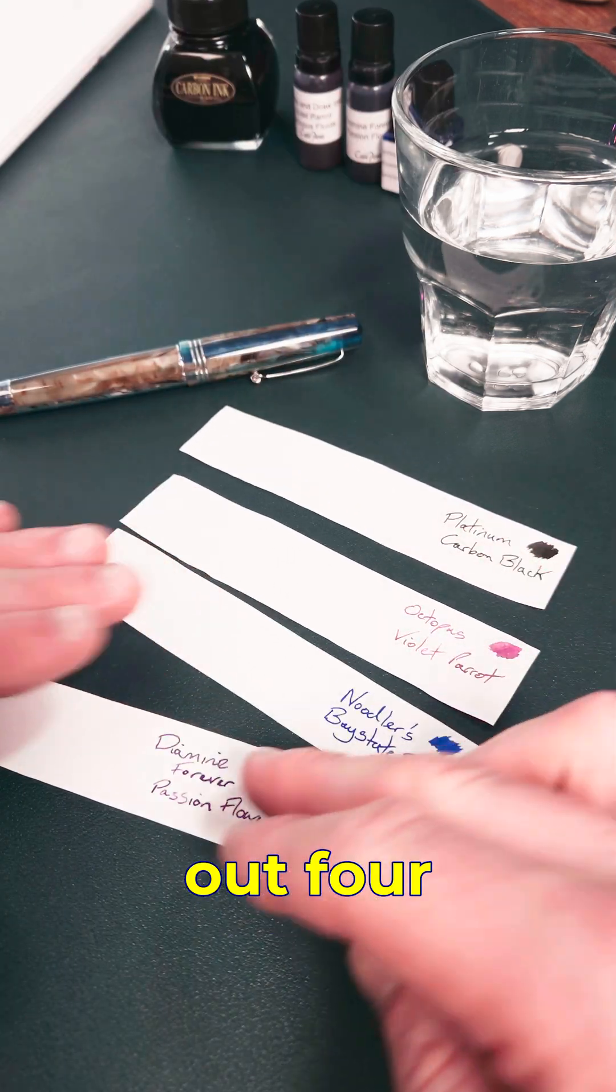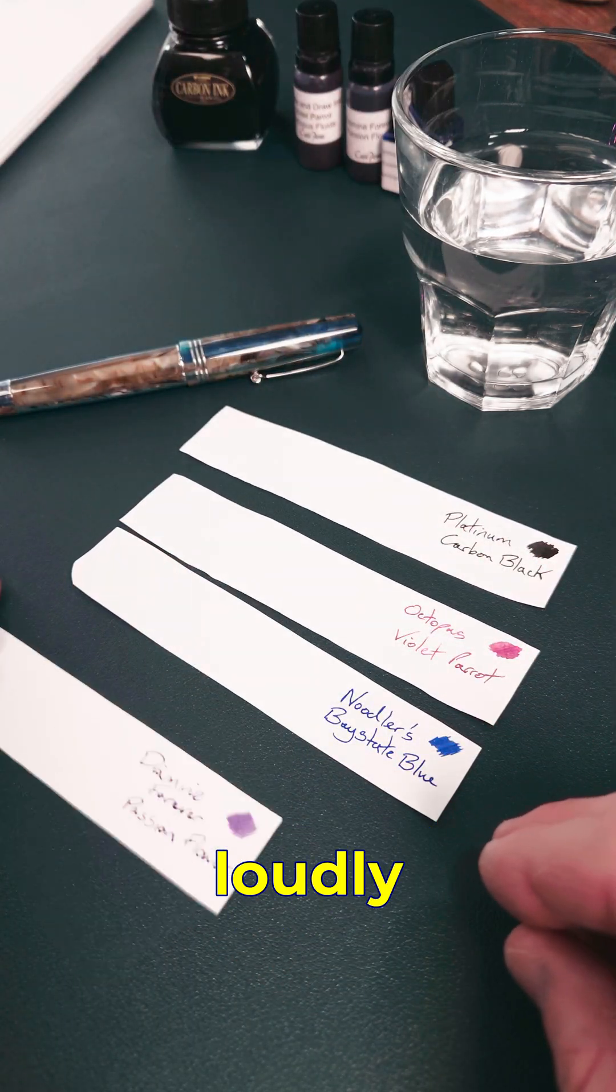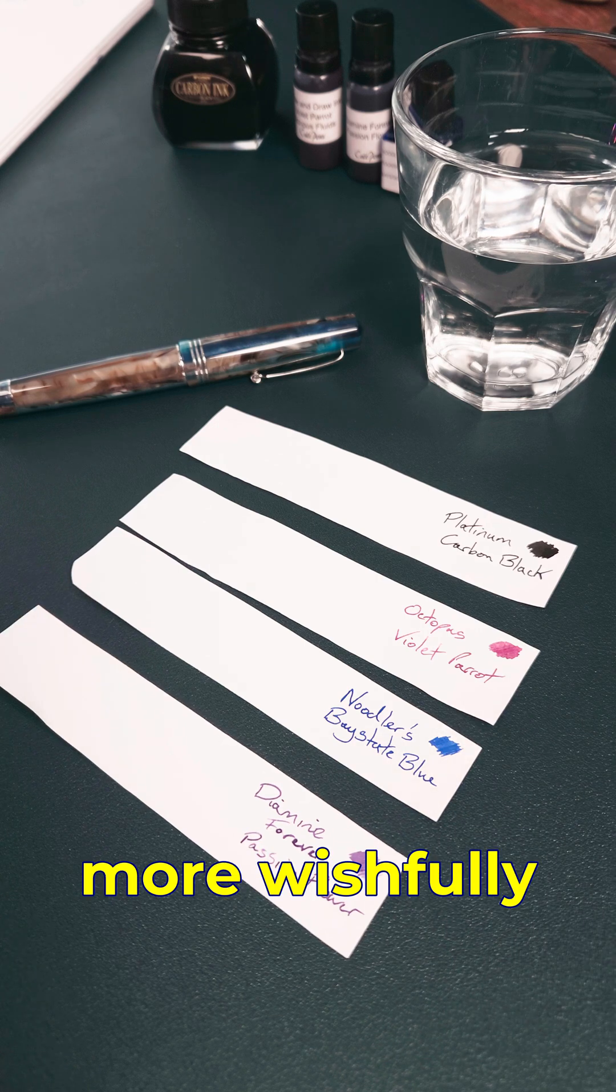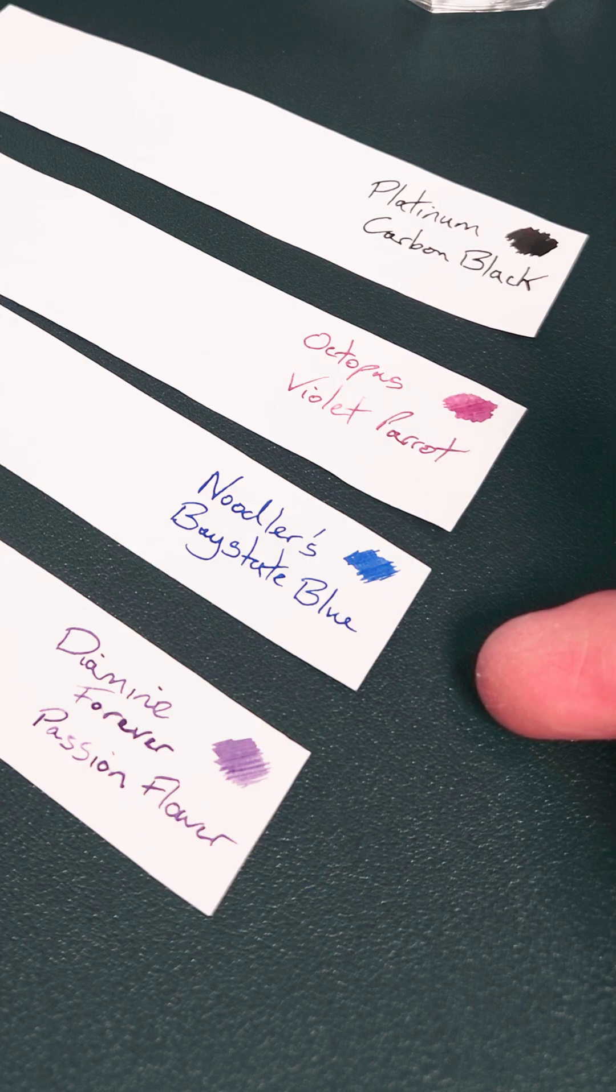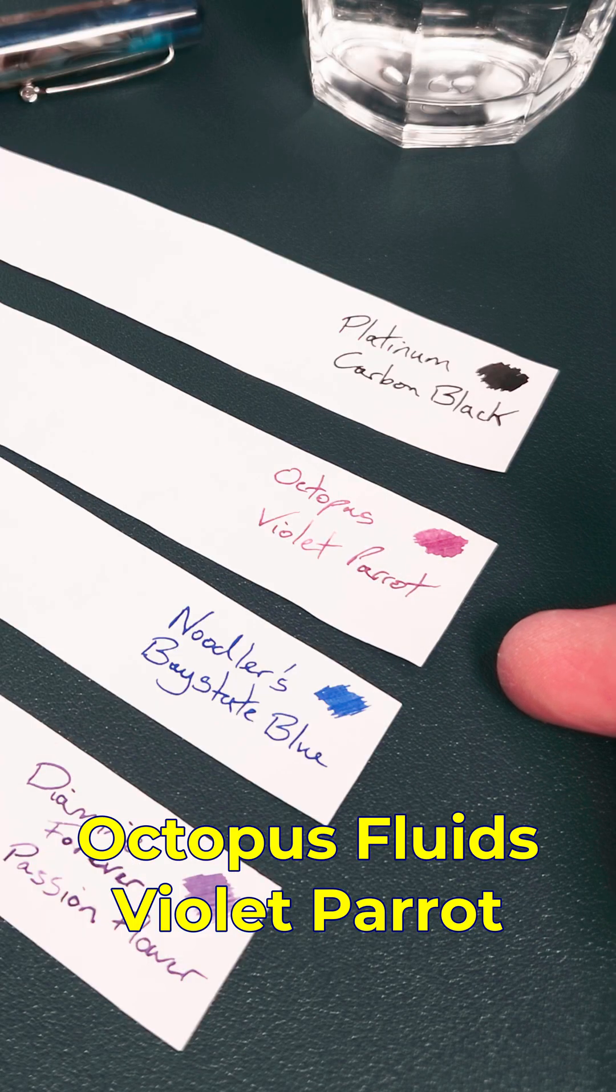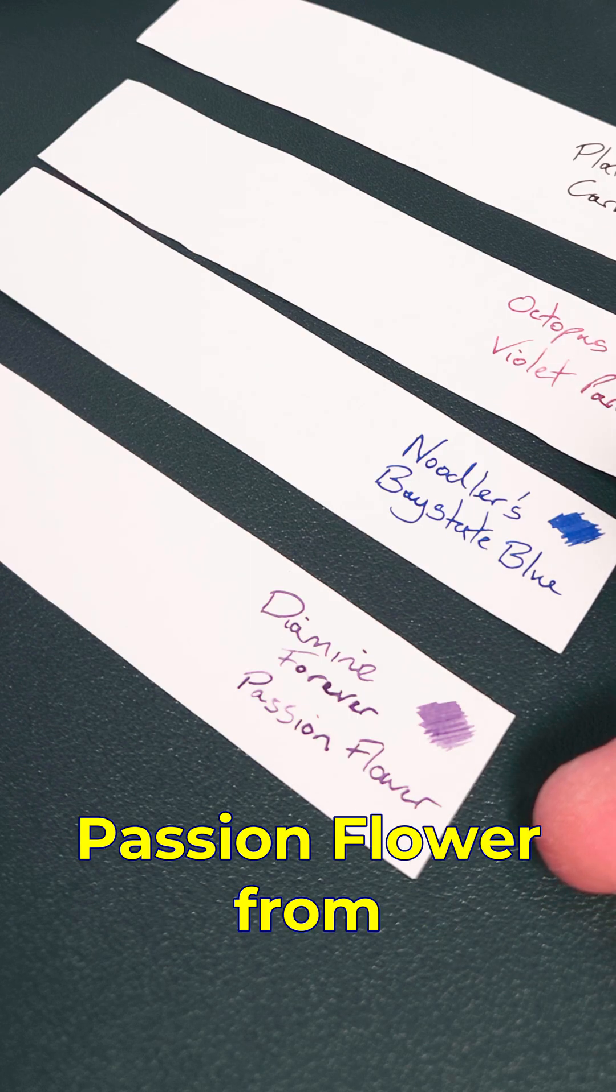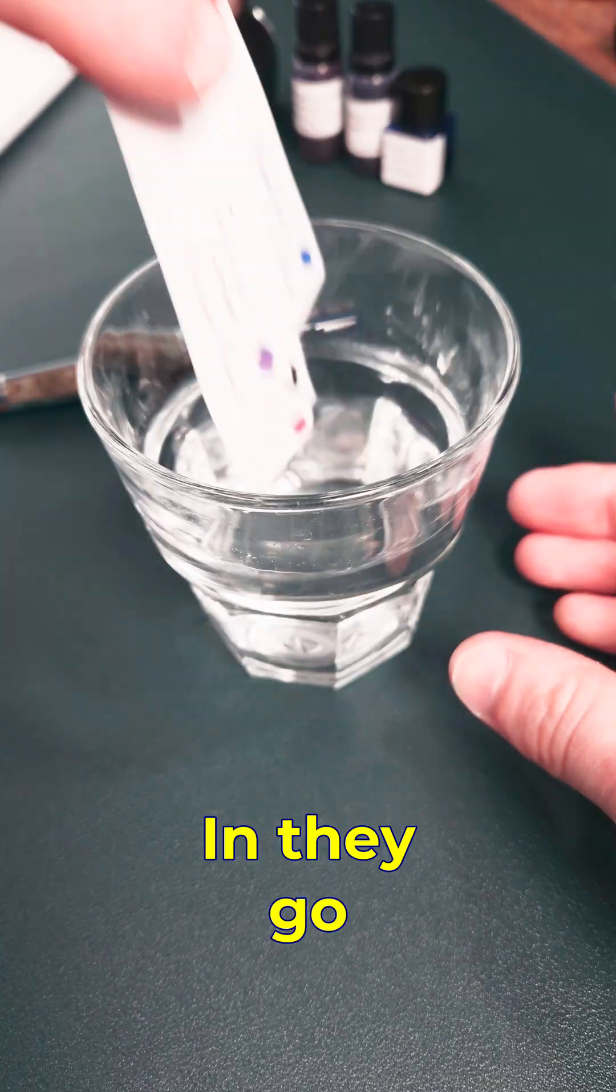Today I'm testing out four different inks that claim to be permanent, some loudly and some more wishfully. Platinum Carbon Black, Noodler's Baystate Blue, Octopus Fluids Violet Parrot and Diamine's Passion Flower from their Forever range. In they go, we're going to give them a solid minute to soak.